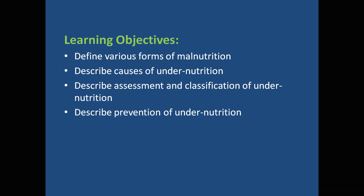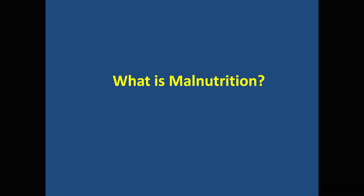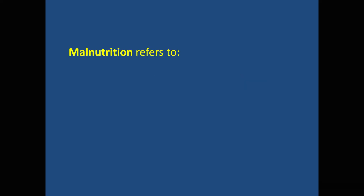The learning objectives for this video are that by the end, viewers should be able to identify various forms of malnutrition, describe causes of malnutrition, describe assessment and classification of malnutrition, and very importantly describe prevention of malnutrition. Moving on — what is malnutrition? Malnutrition refers to any departure from normal nutrition.